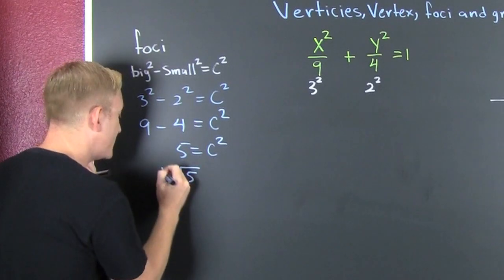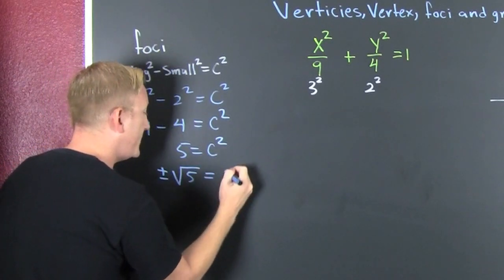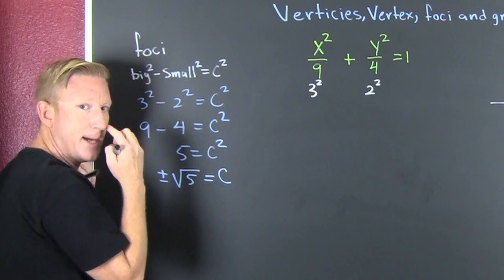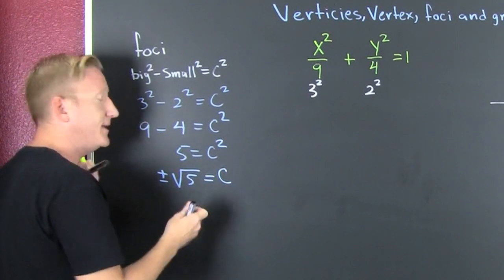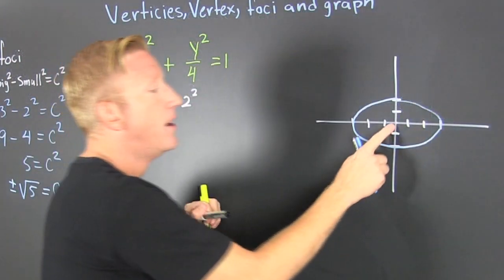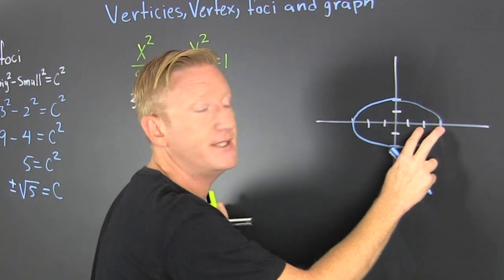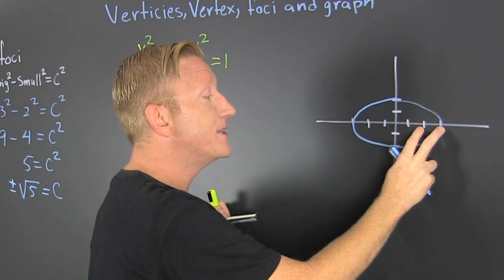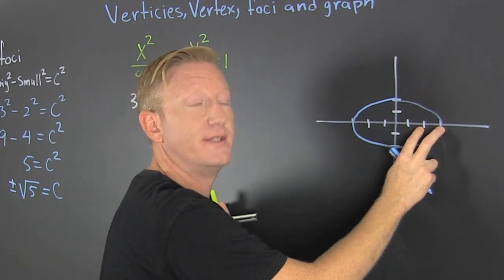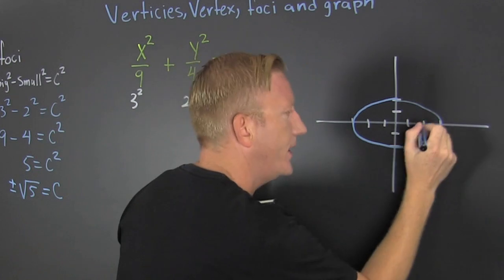And that's what your c is going to be. What is c? C is the distance from the center. Oh, the square root of five. That's in between two and three. Why? Because that's in between the square root of four and the square root of nine.